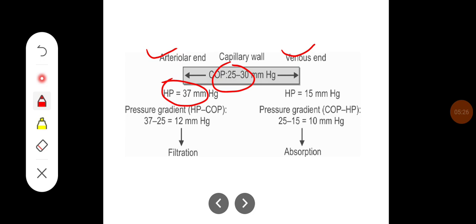The fluid flowing across the arteriolar end: the pressure gradient is such that since the capillary hydrostatic pressure is more than the osmotic pressure in the capillaries, the gradient produces 12 mm of Hg across the arteriolar end which flows from the artery into the interstitium.